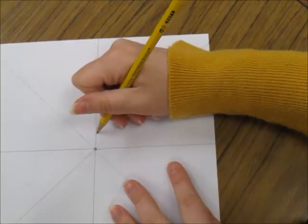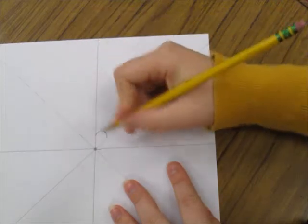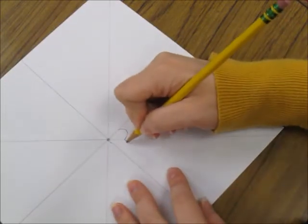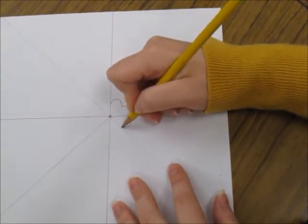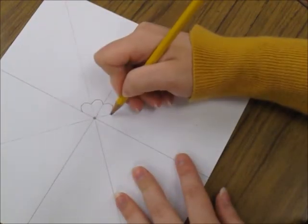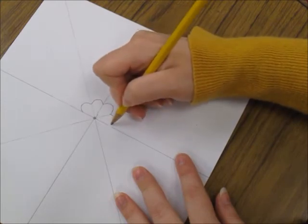Start in the middle and make your smaller arches. If it helps to rotate your paper do that. Go one at a time, do not do them all at once.